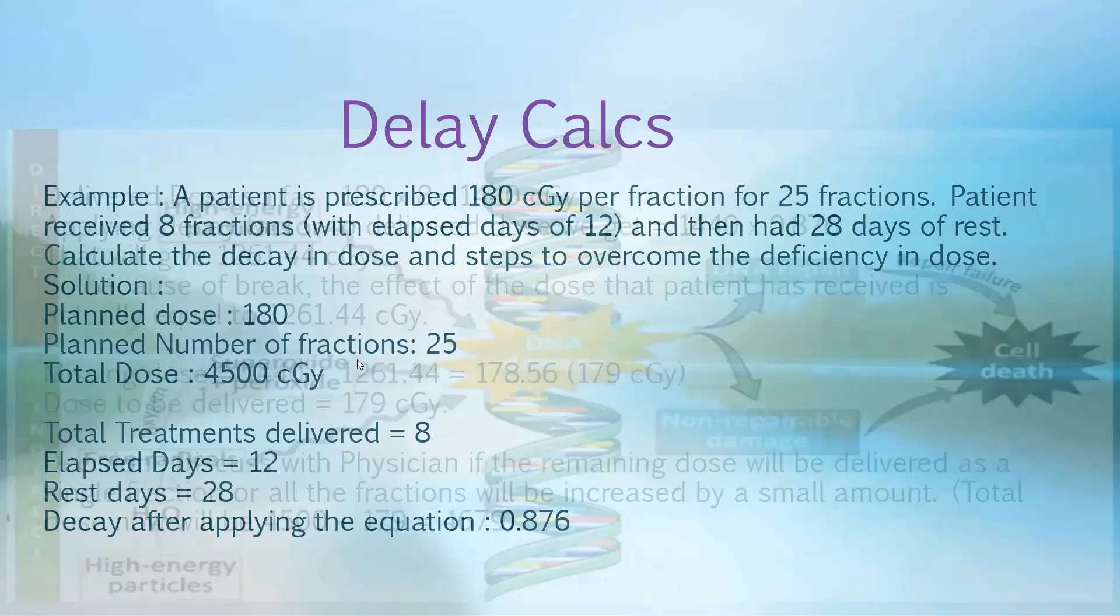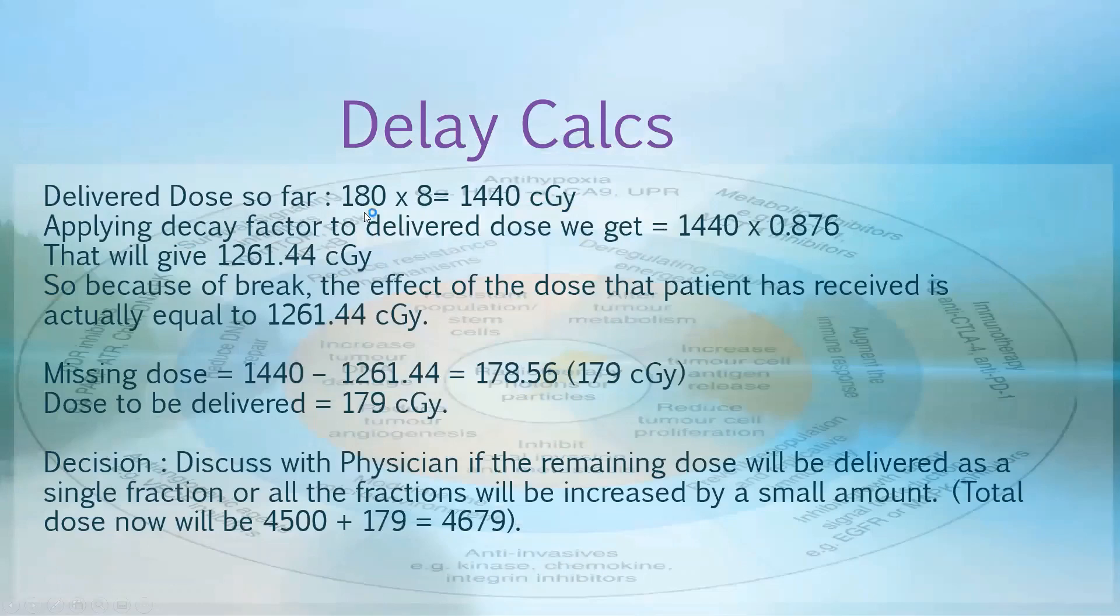When we subtract that, the dose that patient received in the 8 days, we think that the patient received 1,440 centigrade. But actually because of the rest, 13.4% decayed. So the actual dose that the patient has received after the patient comes back from rest will be 1261.44 instead of 1440. The missing dose to the patient is 179 centigrade. Now we have to give this 179 dose either in an additional fraction or we can deliver this dose by adding small fractions to every day.